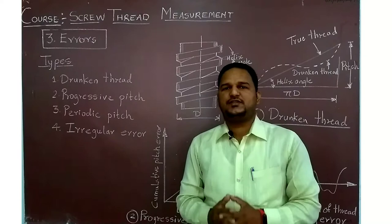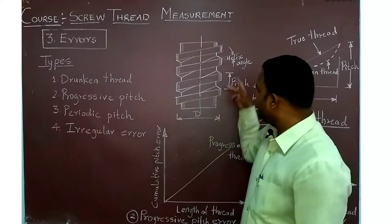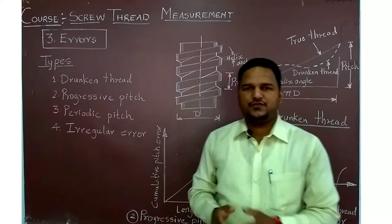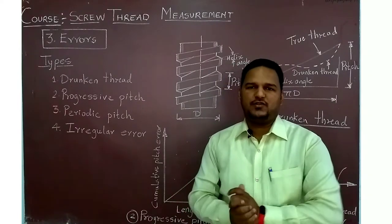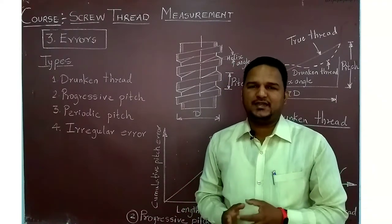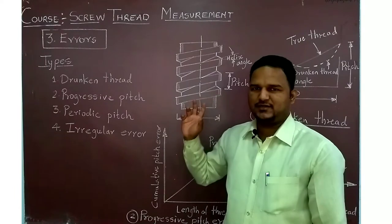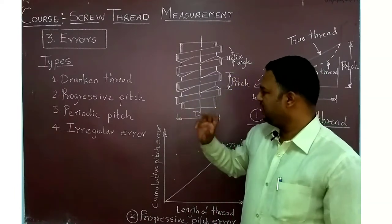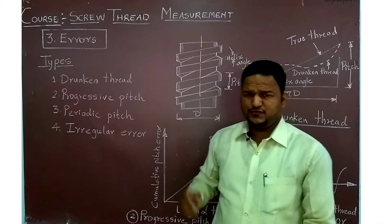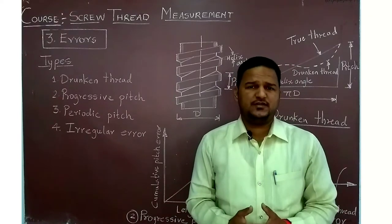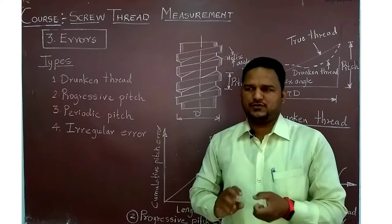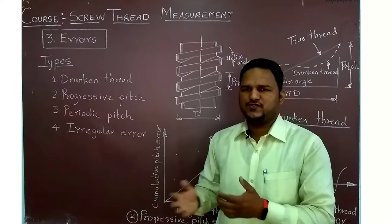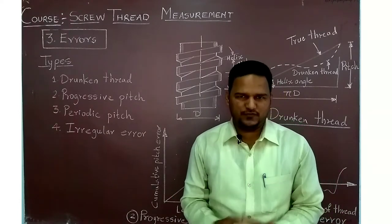If there is an error in the thread angle — this is the helix angle — we will see tightening and loosening of the thread or incorrect alignment. For pitch errors, we will see progressive loosening and tightening of the screw thread assembly.